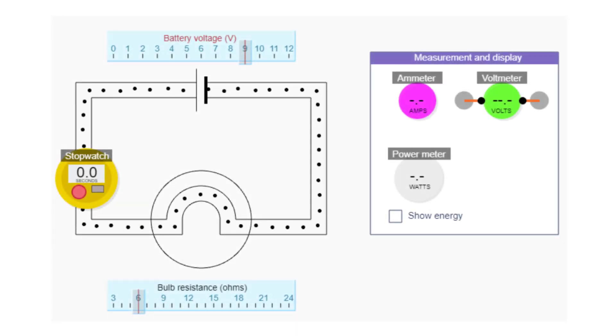Sometimes we're interested in how much charge has flowed past a point in a given time. With our simulation we could just count the number of black dots that passed a point in say 30 seconds and that would give us the charge in coulombs.